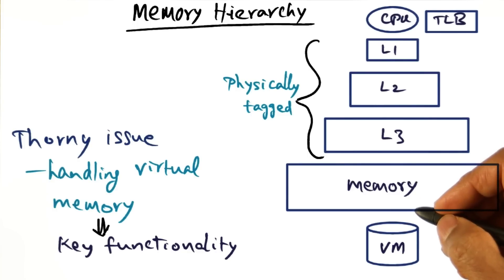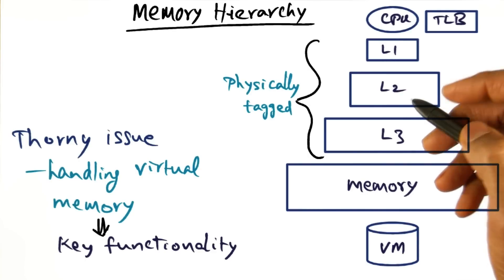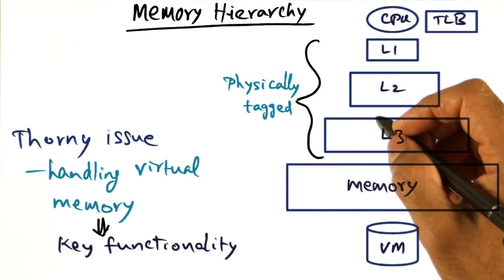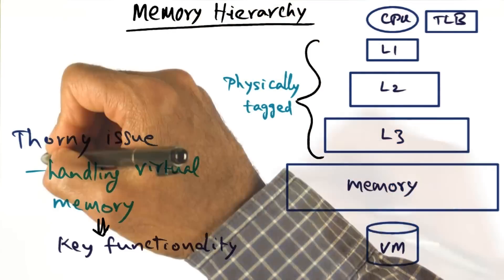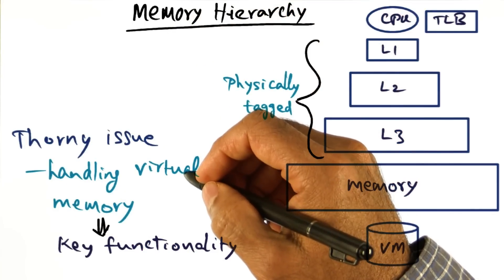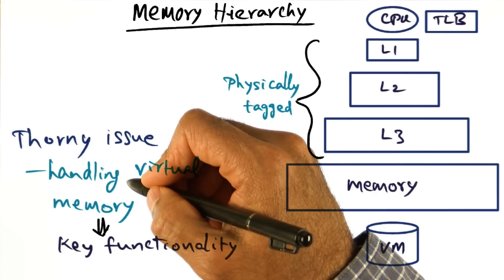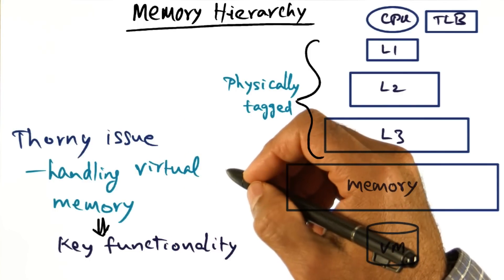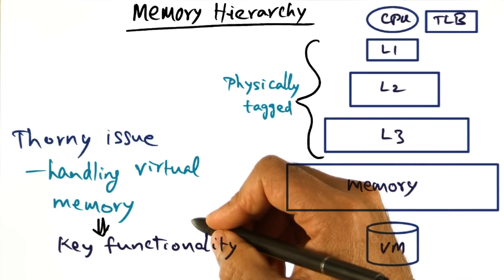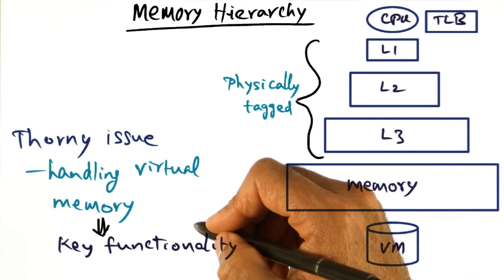Now, caches are physically tagged, and so you don't need to do anything special about them from the point of view of virtualizing the memory hierarchy. The really thorny issue is handling virtual memory, namely the virtual address to the physical memory mapping, which is the key functionality of the memory management subsystem in any operating system.